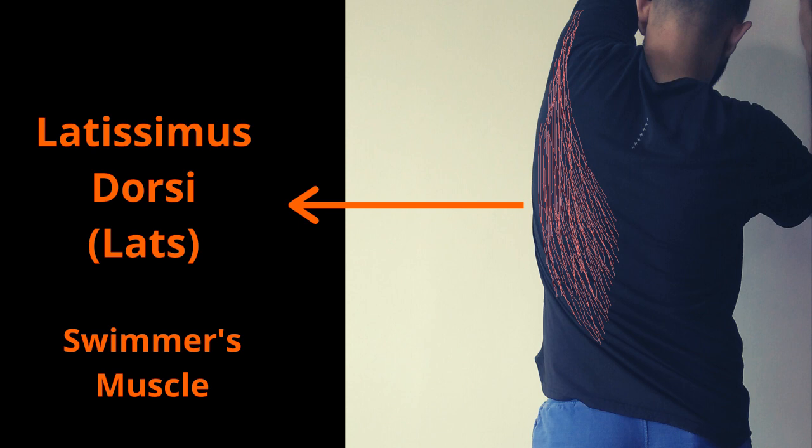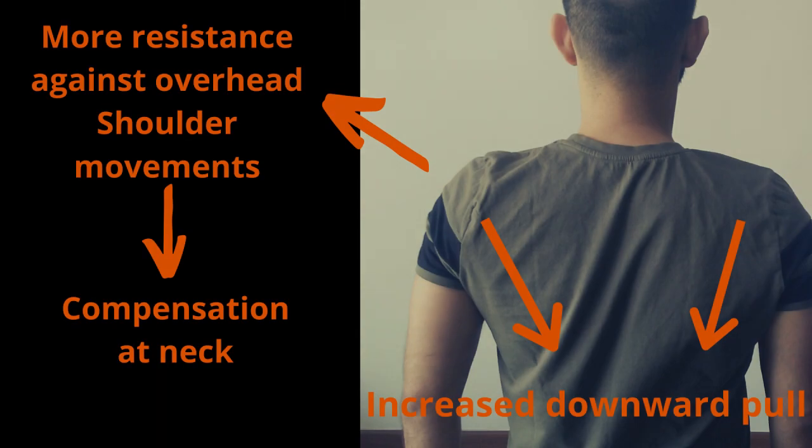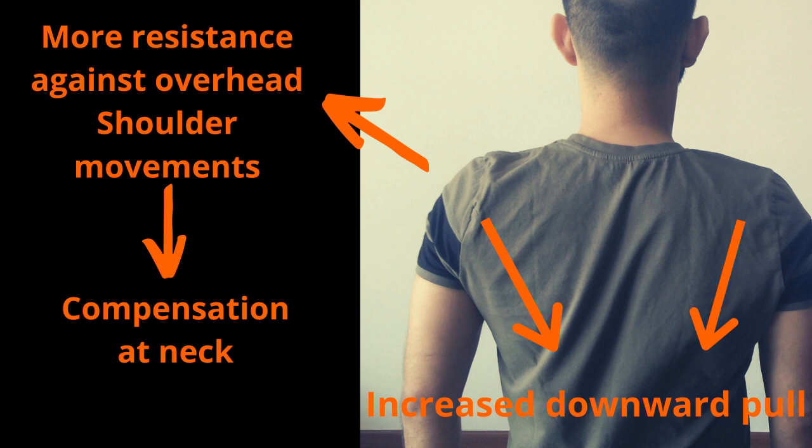Secondary to excessive use, training, or slouching, it can get tighter. A tight lats may limit your shoulder movements and increase chances of shoulder injury. Limited shoulder movements may add extra load on your neck through compensation, leading to neck pain and injury.